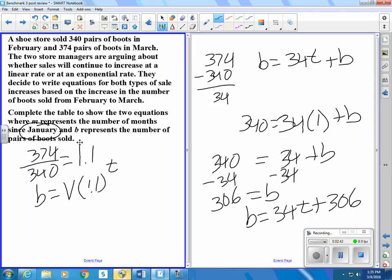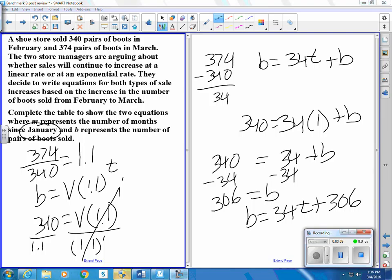Let's put in a value that we know. We know that we had 340 boots when the number of months was 1, so we could solve for v. 1.1 raised to the 1 is 1.1, so I don't have to write raised to the 1. So 340 divided by 1.1, so v is very close to 309. So my equation would be number of boots equals 309 times 1.1 raised to the t for the number, for the time, which is months in this case.